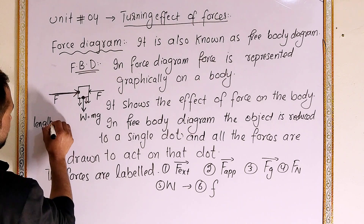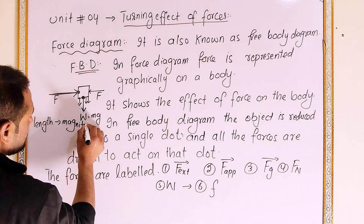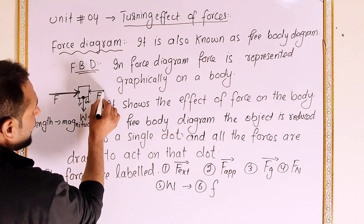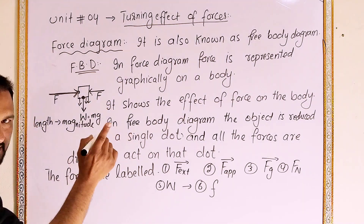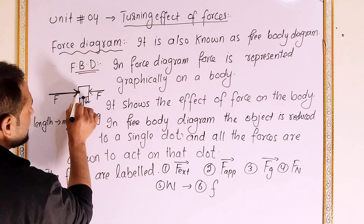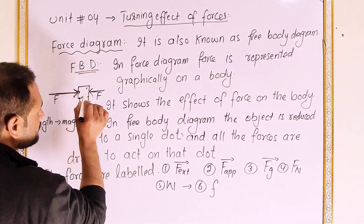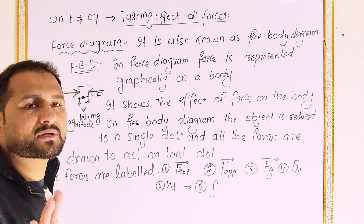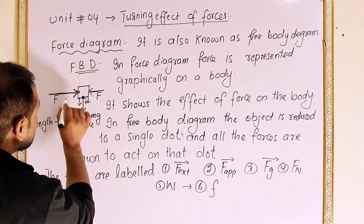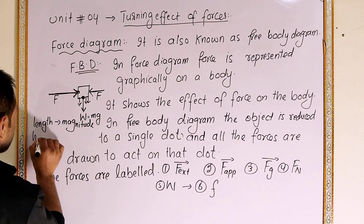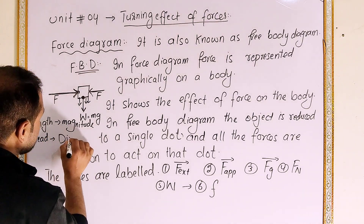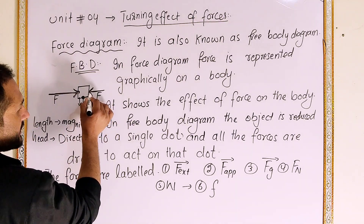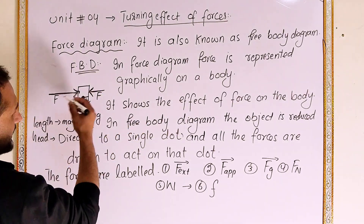The length of the arrow represents the magnitude of the force. The arrowhead represents the direction of the force. So, in a graphical representation of vectors, the arrow length is the force magnitude and the arrow head is the force direction.